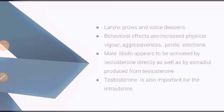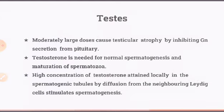The larynx grows and the voice deepens. Behavioral effects include increased physical vigor, aggressiveness, and penile erections. Male libido appears to be activated by testosterone directly as well as by the estradiol produced from testosterone. Testosterone is also important for intrauterine movements. Moderately large doses cause testicular atrophy by inhibiting gonadotropin secretion from the pituitary, and testosterone is needed for normal spermatogenesis and maturation of spermatozoa.